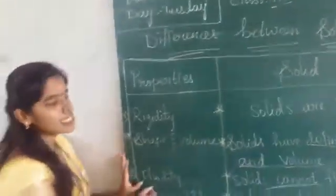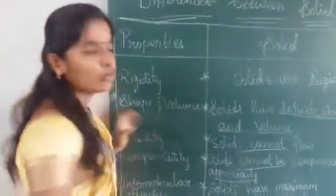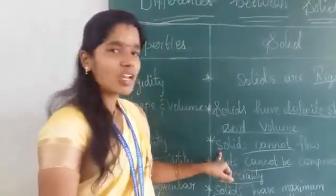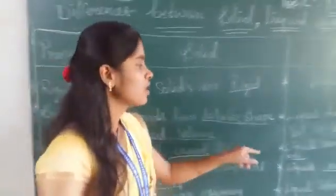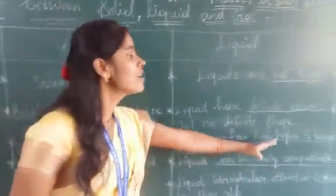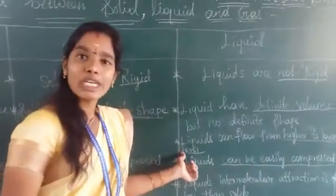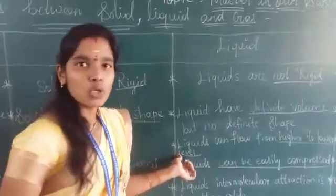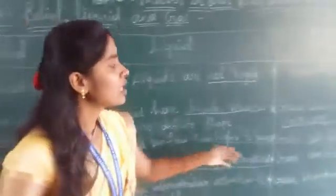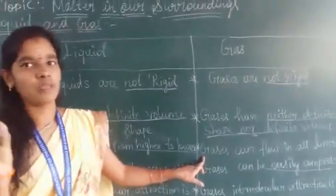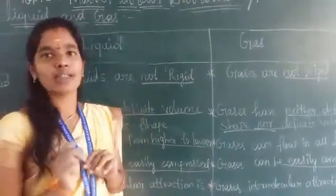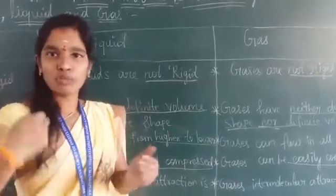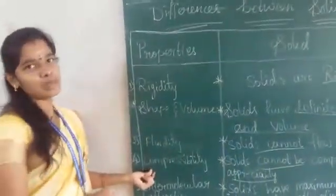The third property is fluidity. Solids cannot flow. Liquids can flow only from higher level to lower level, not lower to higher. Gases can flow in all directions.